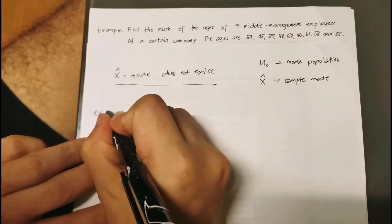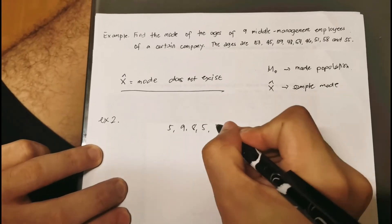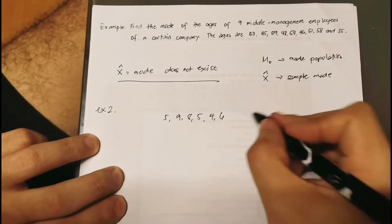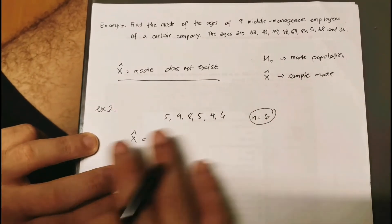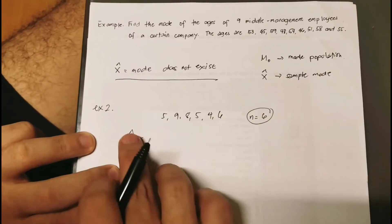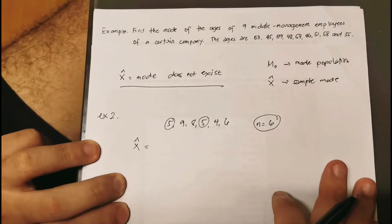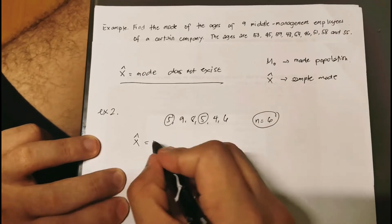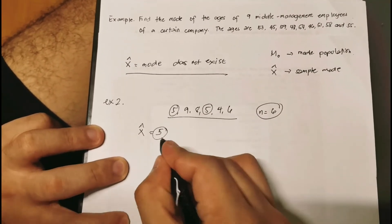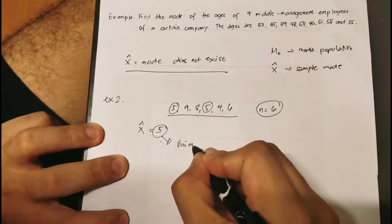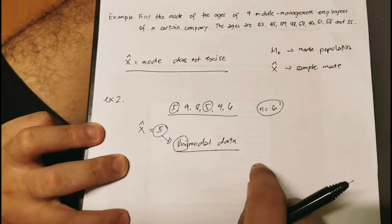For Example 2, we have the scores: 5, 9, 8, 5, 4, 4, 6 — so n equals 6, that is our sample size. Let's find the mode. We notice that 5 is repeated, while all other numbers are unique. So our mode is 5. When a data set has only one mode, we call it a unimodal data set — from the word 'uni,' meaning one.